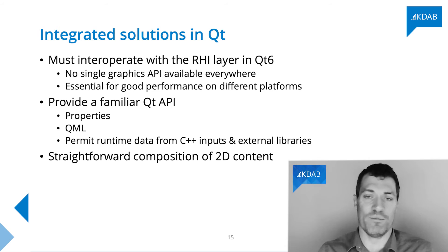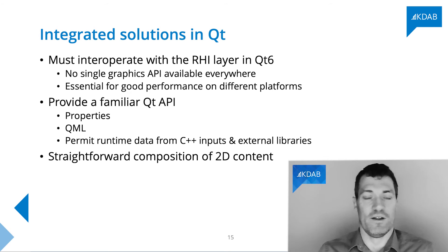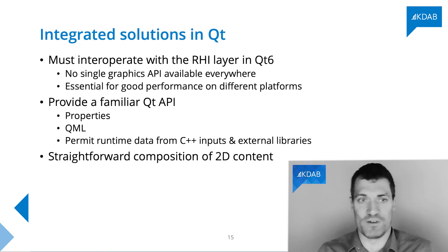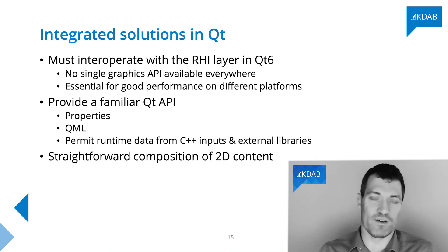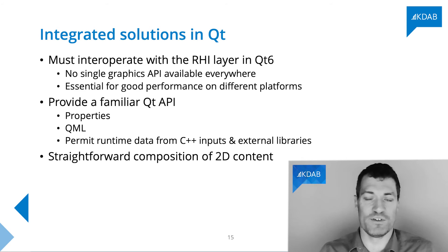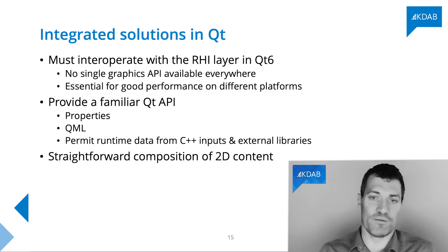We're going to talk about RHI in more detail in a follow-up video because it's a very complex topic. Another important area is having a familiar Qt API. Ideally we want something that has properties, integrates with QML and our existing QML files, and also allows loading runtime data from C++ inputs and external libraries. It should also be straightforward to combine our 3D content with 2D content, which brings us to our fifth point.